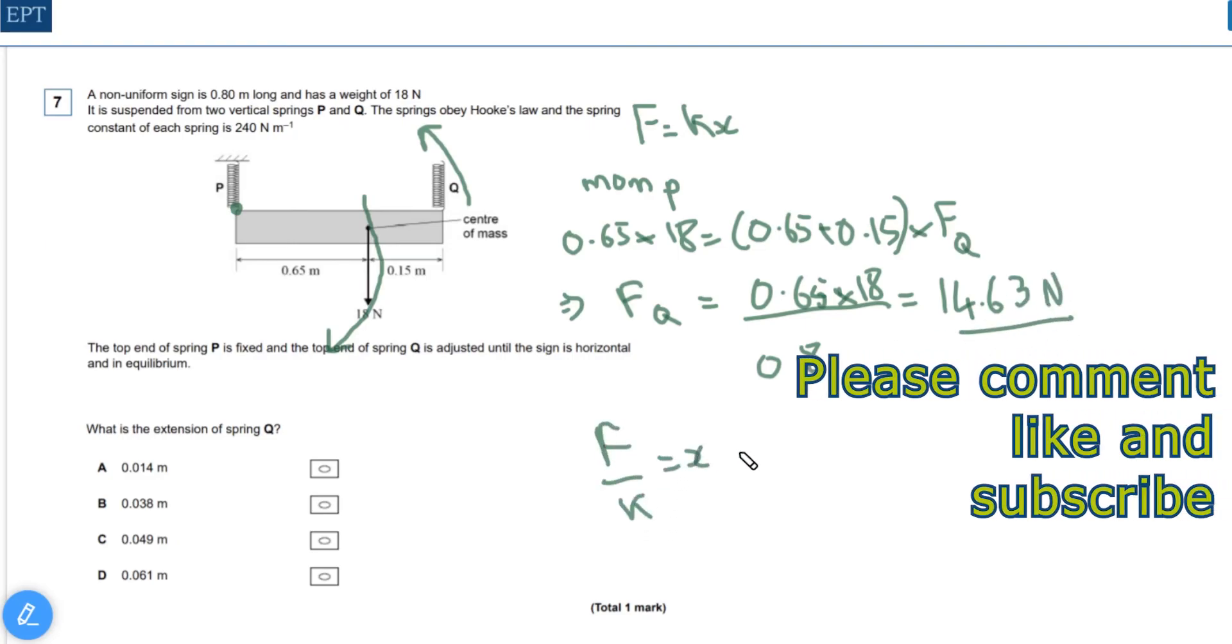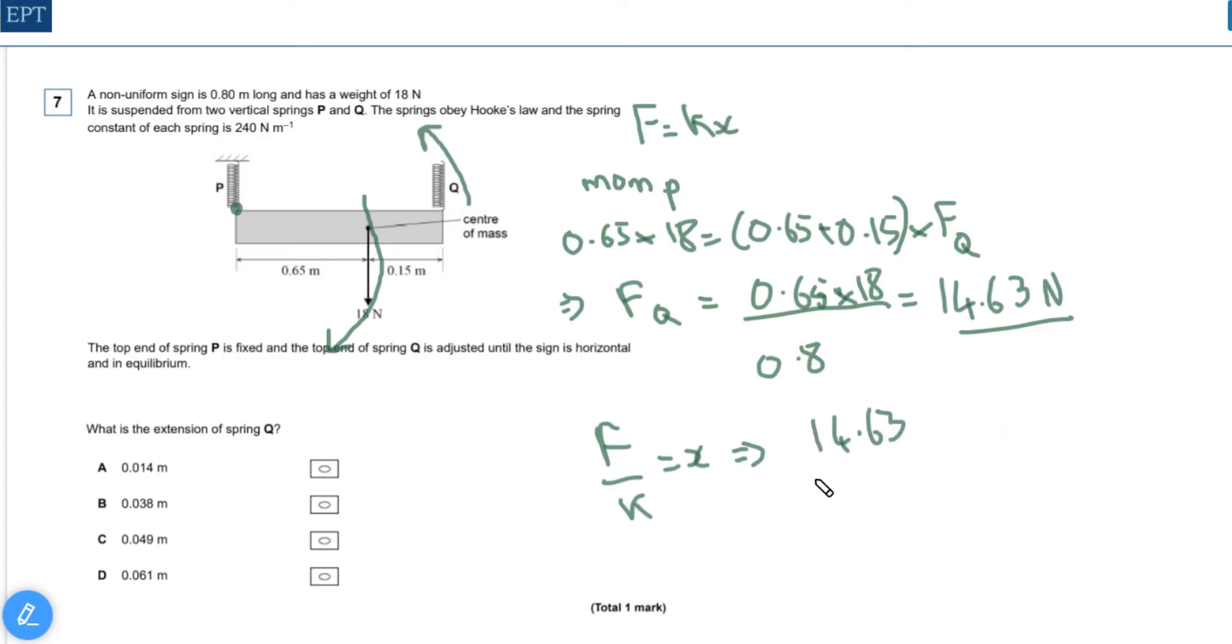Now it's just a question of plugging in the values into f over k equals x, so that's going to be 14.63 over 240, which gives 0.061. So the answer is d.